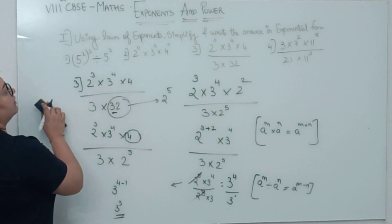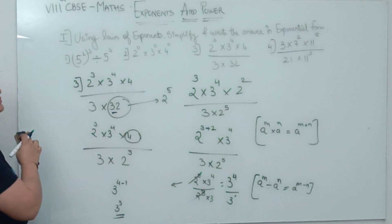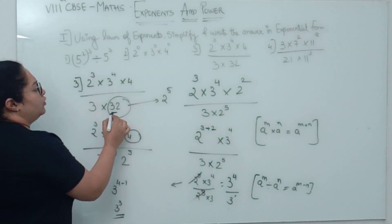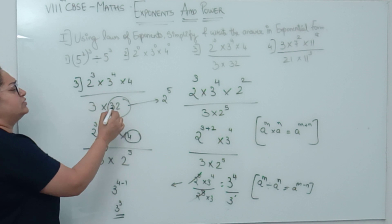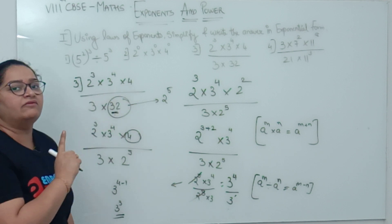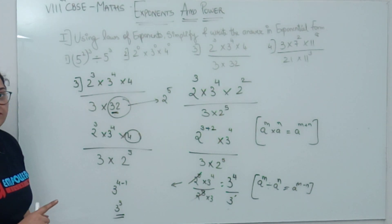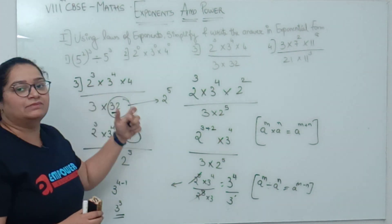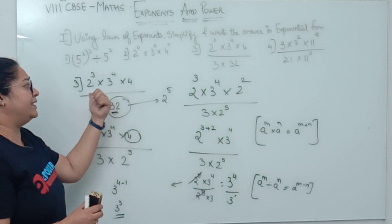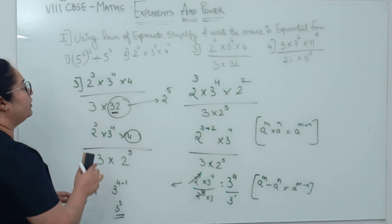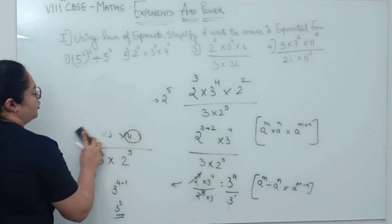Let us go to the 4th sum. Did you understand the sum? Very easy. Whenever you see a 2 digit number, 3 digit, even single digit, if there are powers, you have to prime factorize those numbers. What is the main concept? You have to make the bases similar. If the bases are similar, you can use your laws.